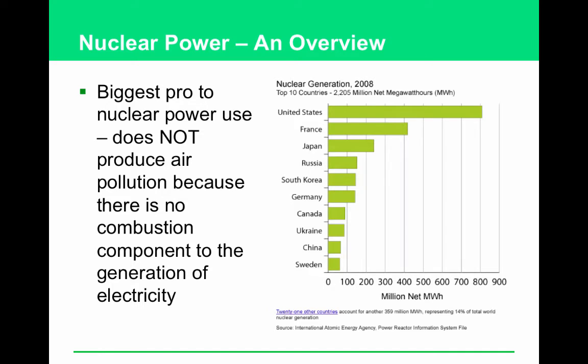What type of pollution is not produced by nuclear power plants? Air pollution. That's a really big deal because there's no combustion component to the generation of electricity.